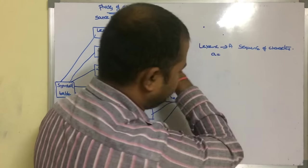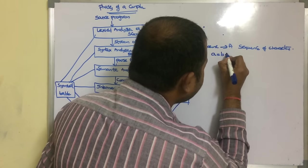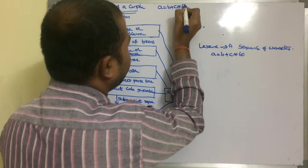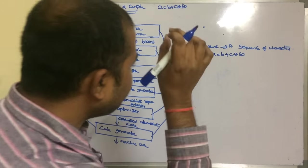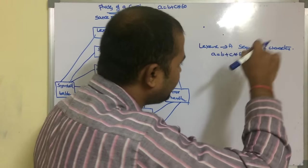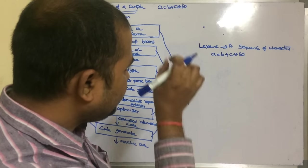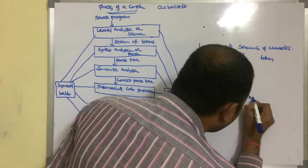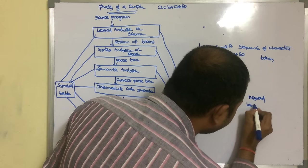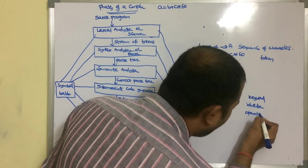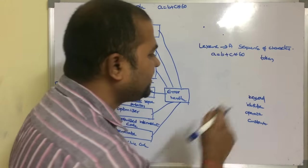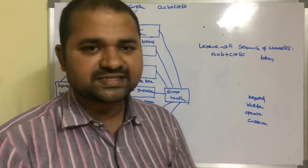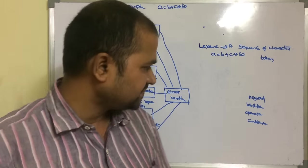Let us assume our source program contains only one statement: a = b + c * 16. This will be given as input to the lexical analyzer. The lexical analyzer reads the program character by character and converts them into lexemes, and each lexeme is represented in the form of a token. A token may be a keyword, identifier, operator, or a constant. In C, C++, or Java, keywords include if, else, for, while, and so on.